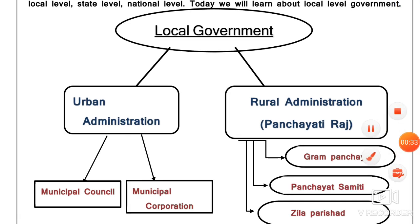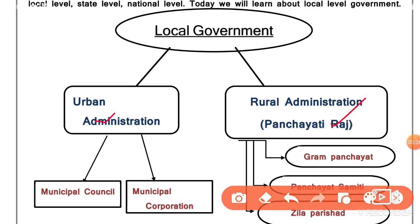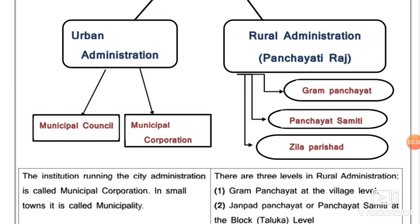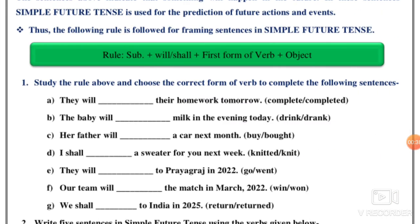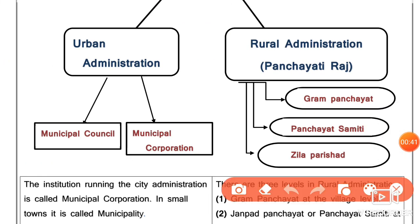Local level government is divided into two parts. One is Urban Administration and one is Rural Administration. Rural Administration is called Panchayati Raj. In Urban Administration, there are two types of government: Municipal Council and Municipal Corporation.